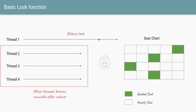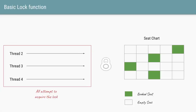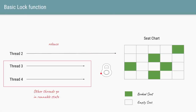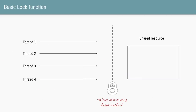Once thread one releases the lock, all the other threads which were in the waiting state can become runnable now because the lock is not in anyone's possession. The other three threads can try to access the lock again. Let's say in this case only thread two will be able to get the lock. Since thread two has the lock, only thread two can access the seat chart and do the booking. The other two threads will go into the wait state. Thread two will book the seat and will release the lock, and the remaining threads will come back into the runnable state.